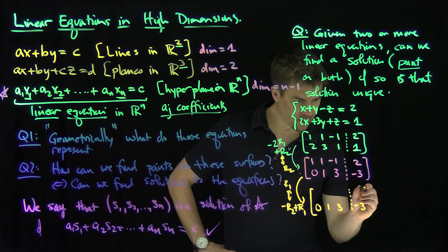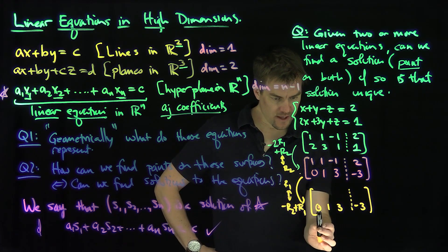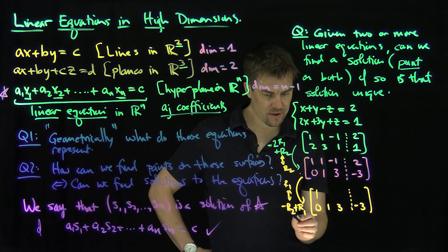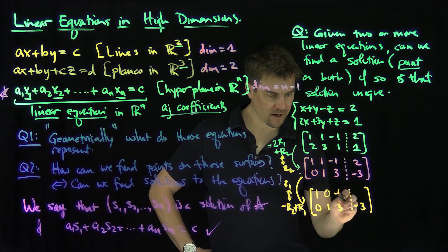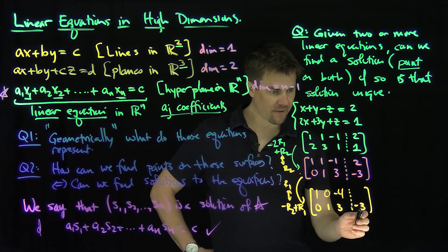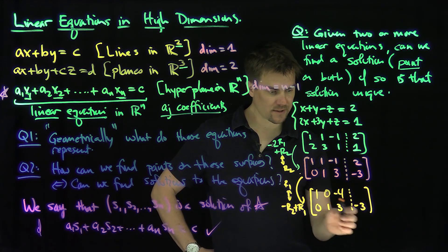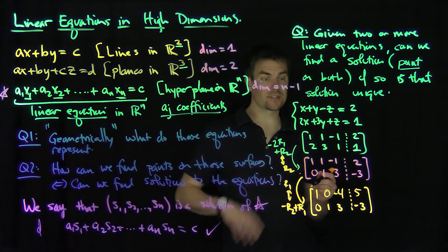Now I replace row 1 with negative row 2 plus row 1. The second row stays the same. For row 1: 0 plus 1 stays 1; negative 1 plus 1 gives 0; negative 3 plus negative 1 gives negative 4; negative negative 3 plus 2 gives 5.